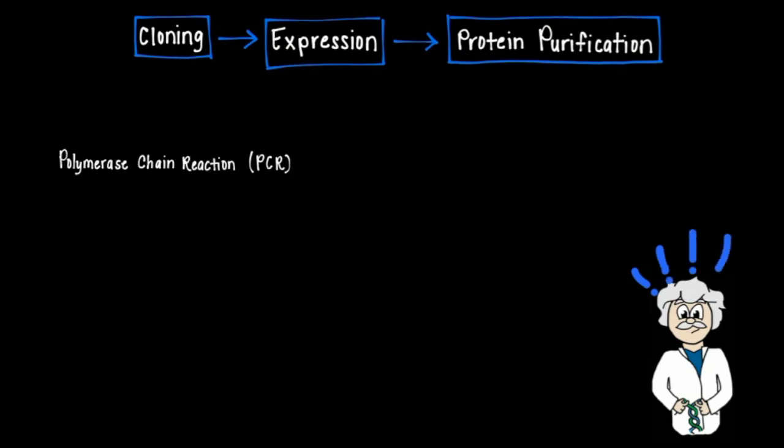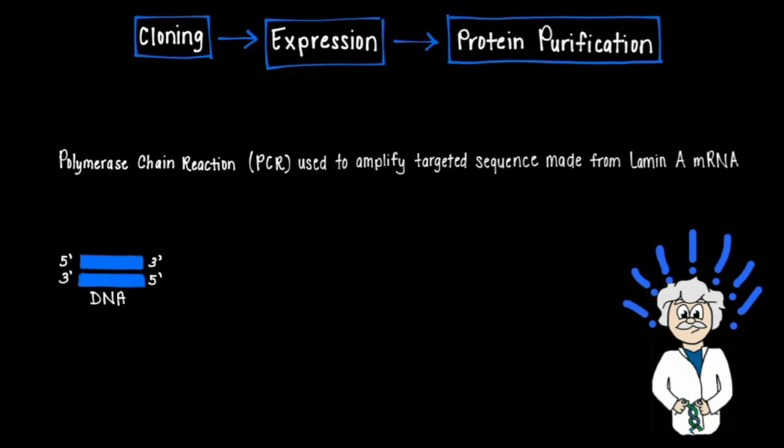Polymerase chain reaction, or PCR, was used to amplify the targeted sequence of the intronless mRNA gene made from the lamin A mRNA in reverse transcriptase. PCR consists of three steps: heating, cooling, and replication.